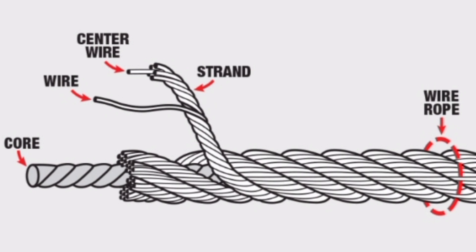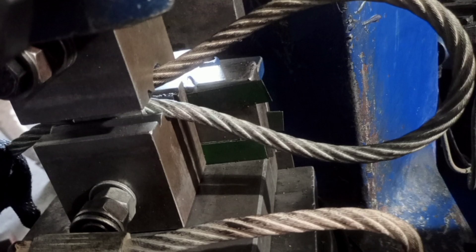Wires are the smallest component of wire rope and they make up the individual strands in the rope. Wires can be made from a variety of metal materials including steel, iron, stainless steel, monel, and bronze. The wires can be manufactured in a variety of grades that relate to the strength, resistance to wear, fatigue resistance, corrosion resistance, and curve of the wire rope.